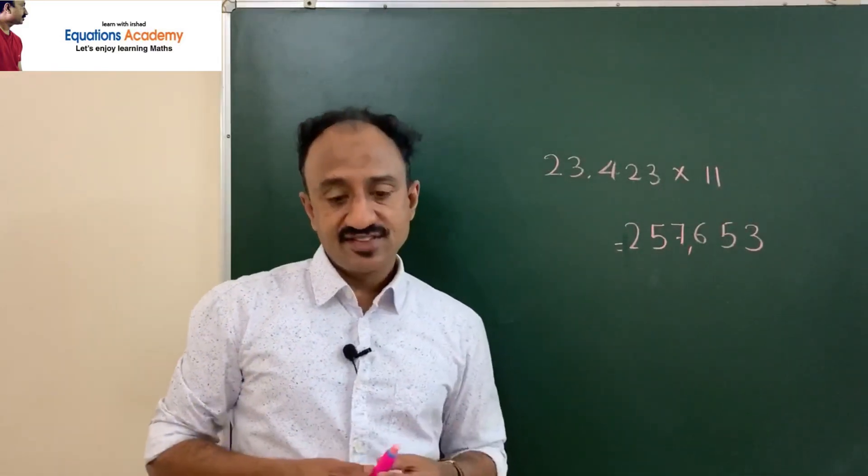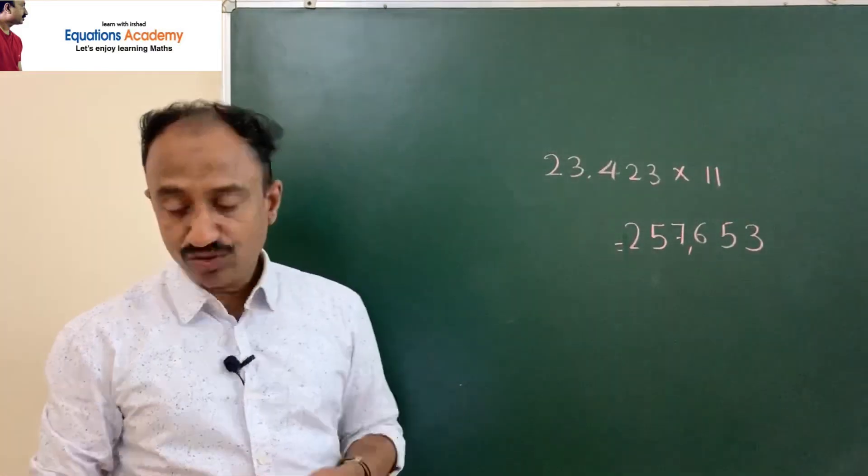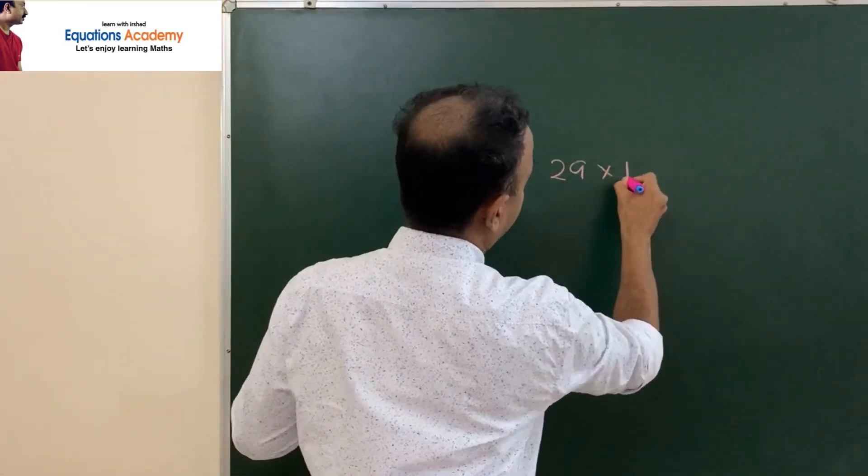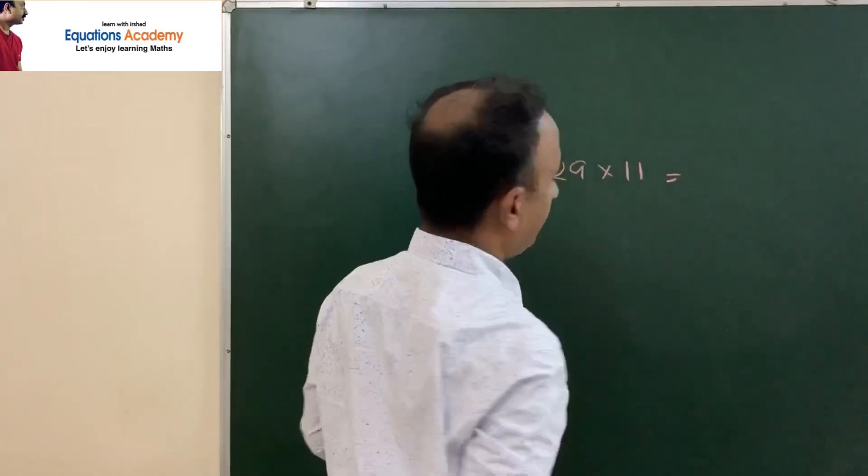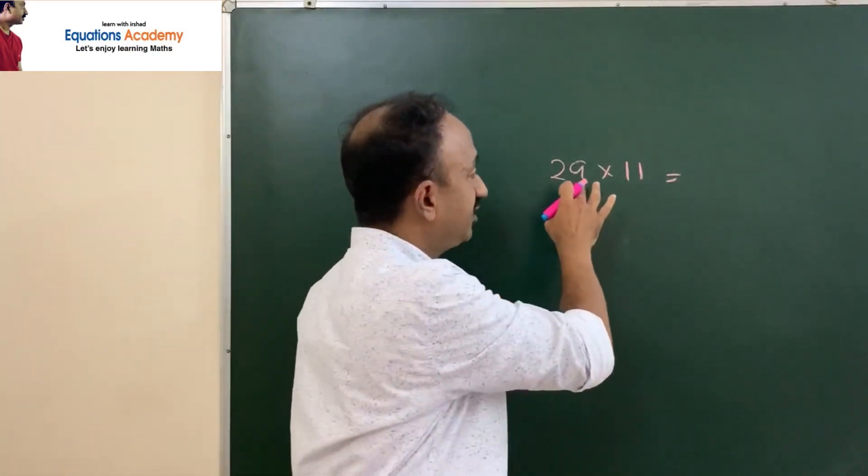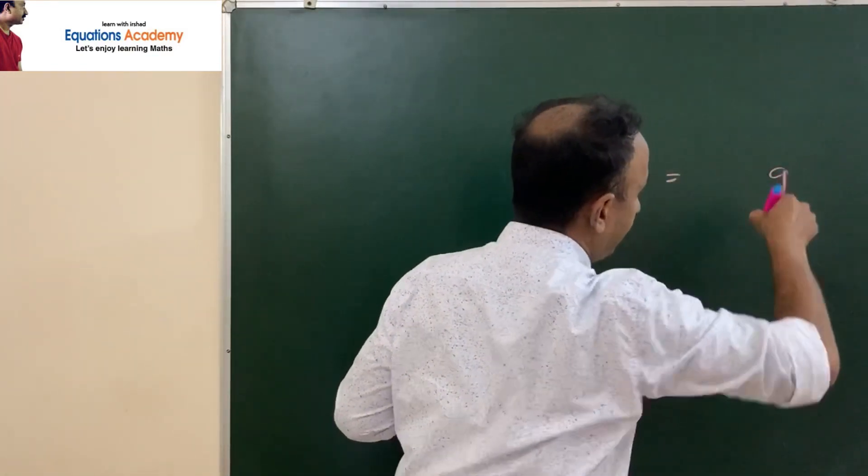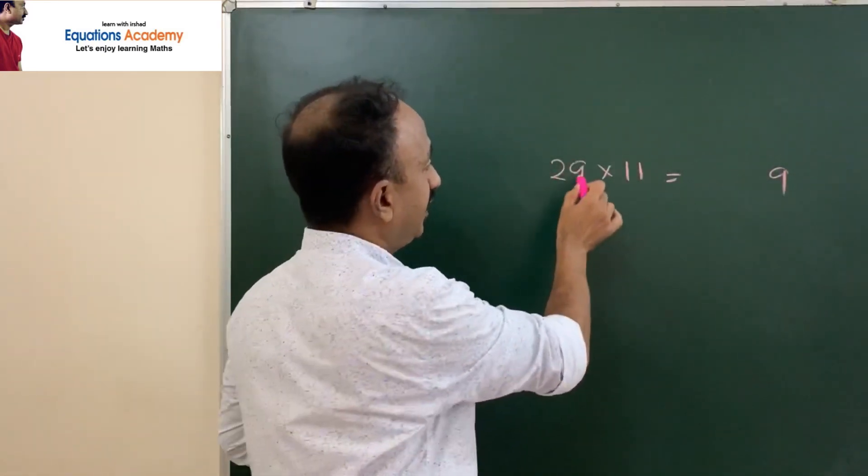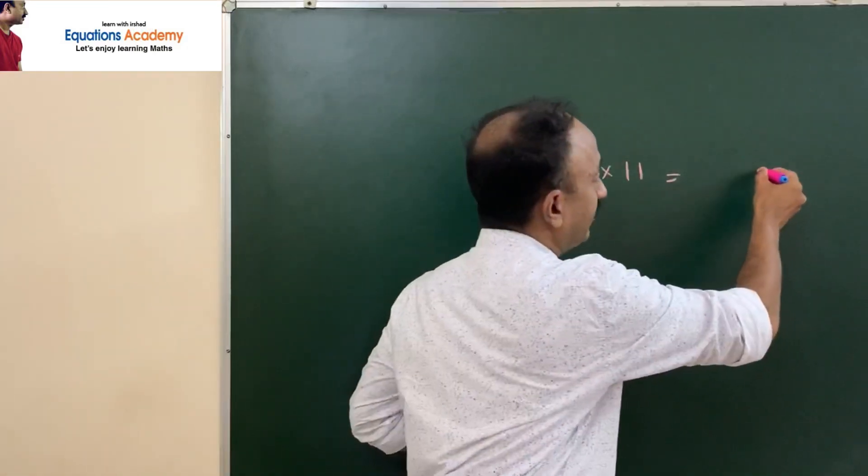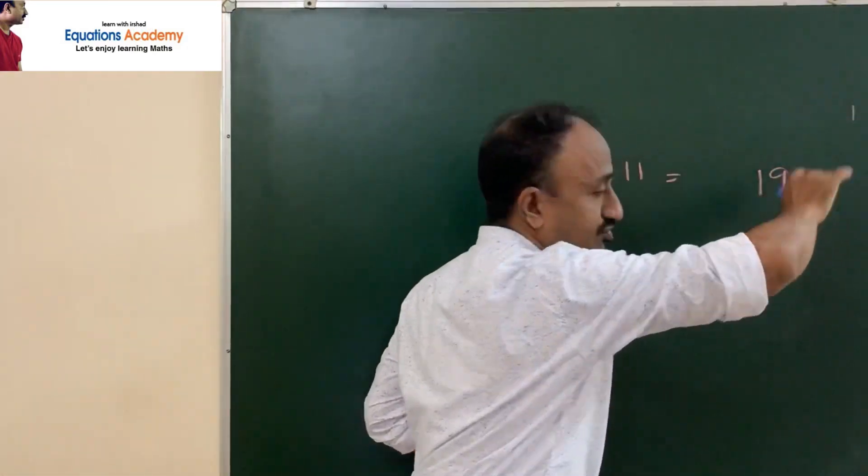Now, there are some cases where carry forward comes. 29 times 11. 29 multiplied by 11. As we did, first keep this 9 as it is. Then 9 plus 2 is 11. We will put the 1 here and 1 is carried forward.